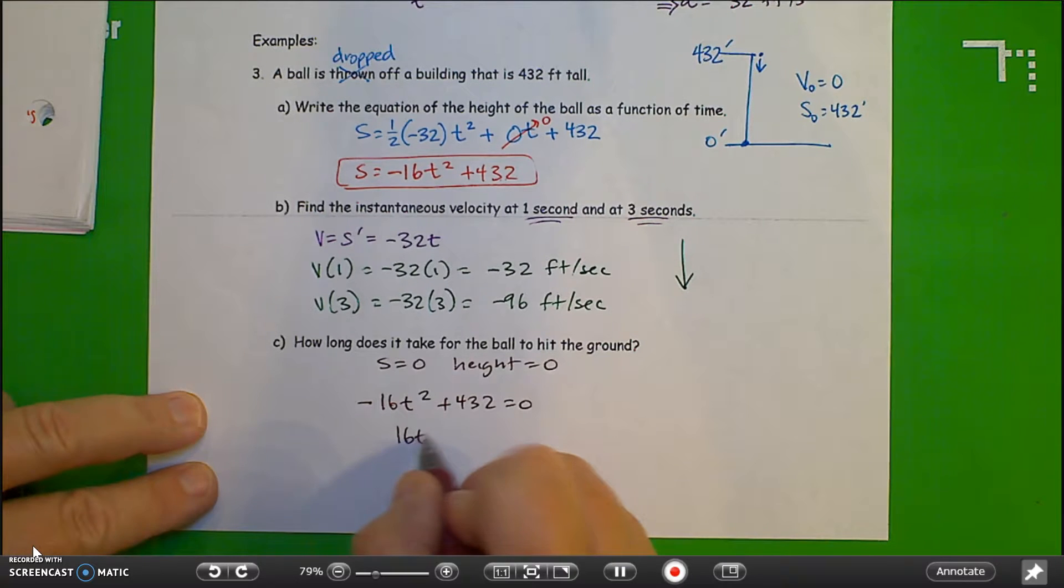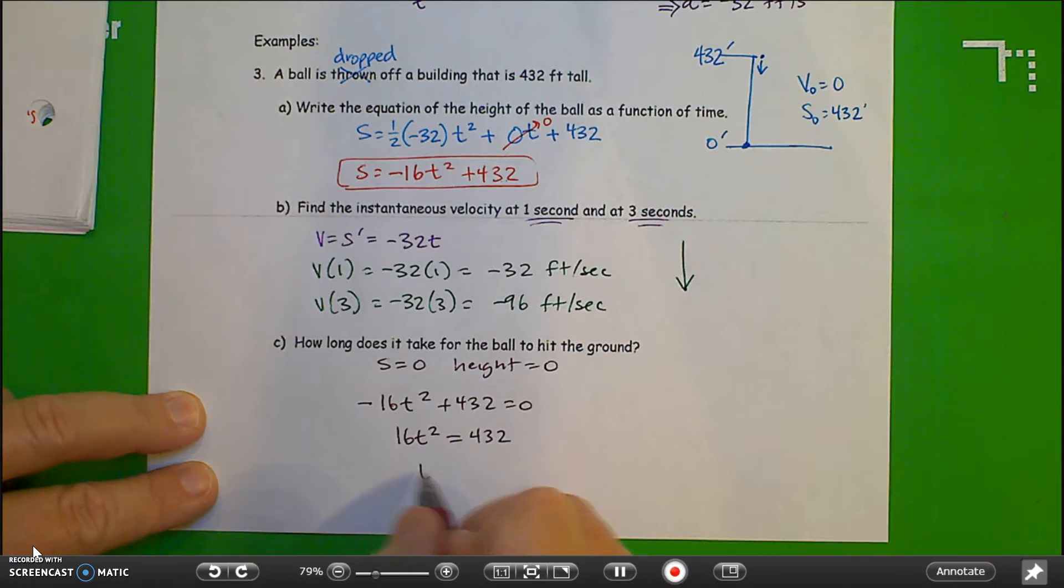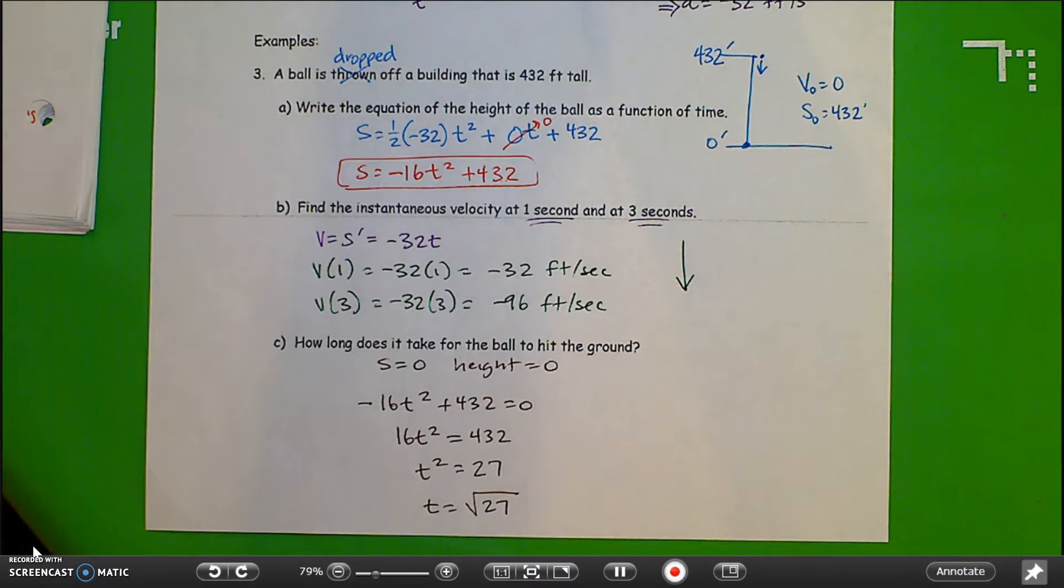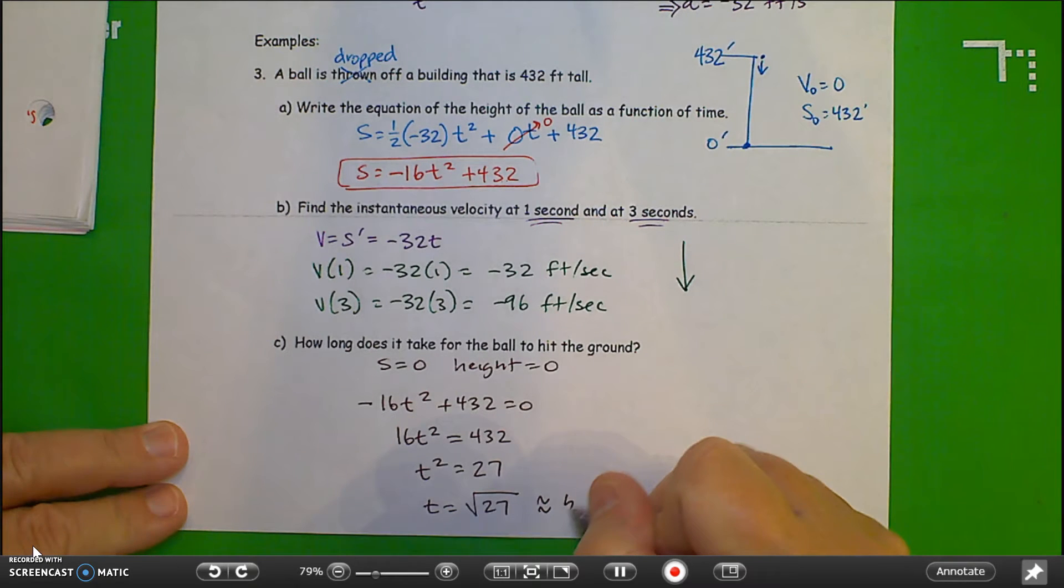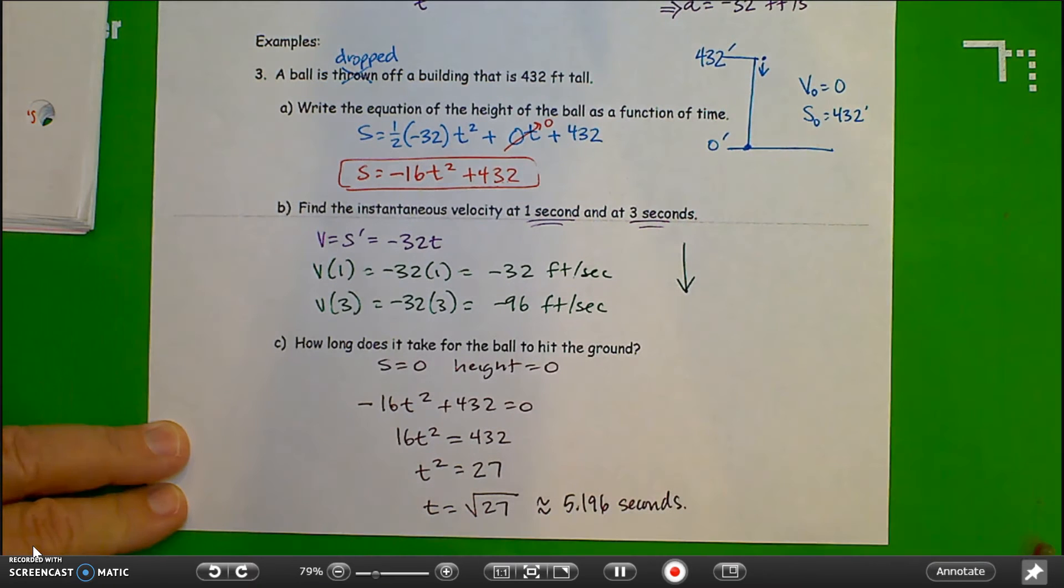So that gives me 16t squared equals 432. T squared equals 27. So t equals square root of 27. I don't really need to worry about the plus or minus here because there's no negative time. And if you put that in your calculator, you get about 5.196 seconds. On the next page, we're going to continue with this problem.